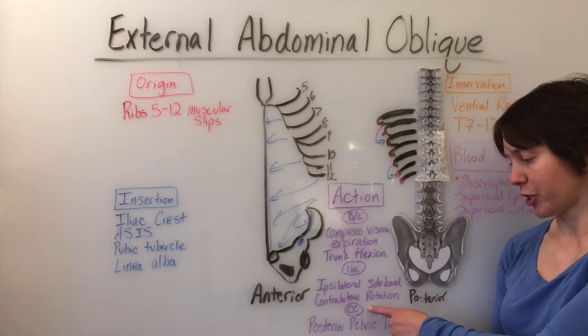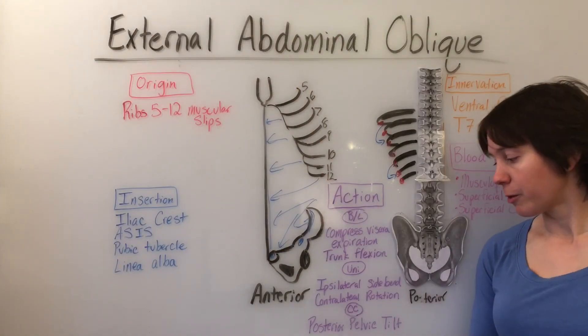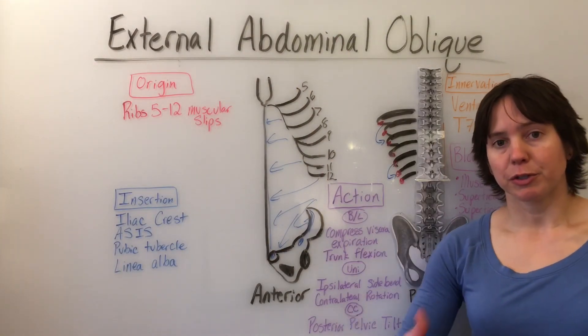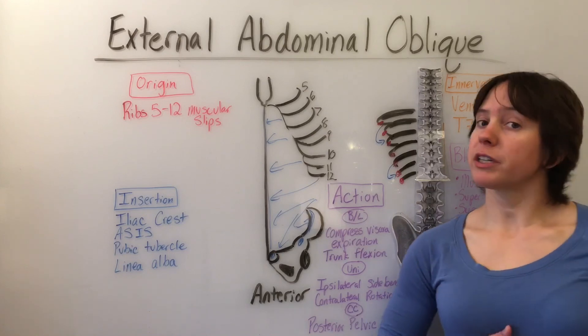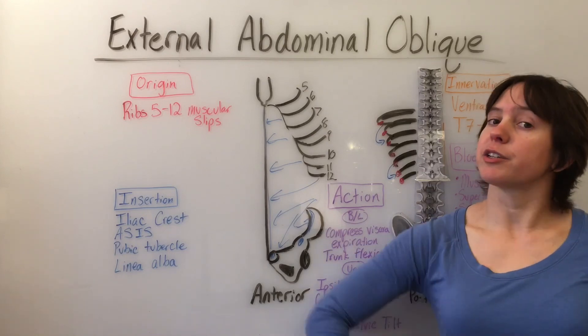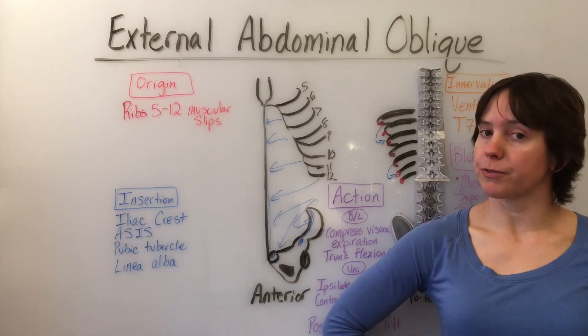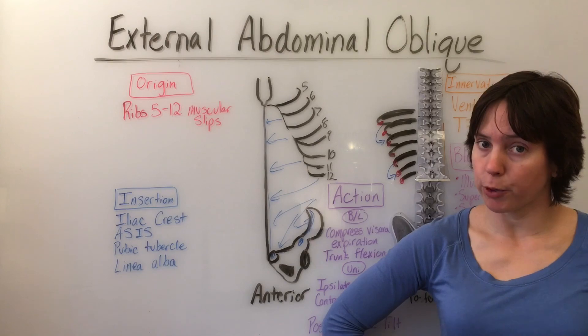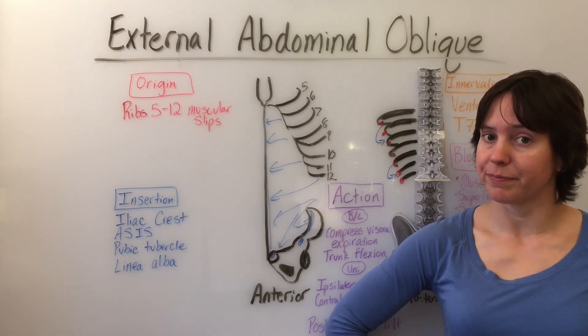Closed chain, it will do posterior pelvic tilt. So if your trunk is anchored and your pelvis is free, it will tilt the pelvis posteriorly.